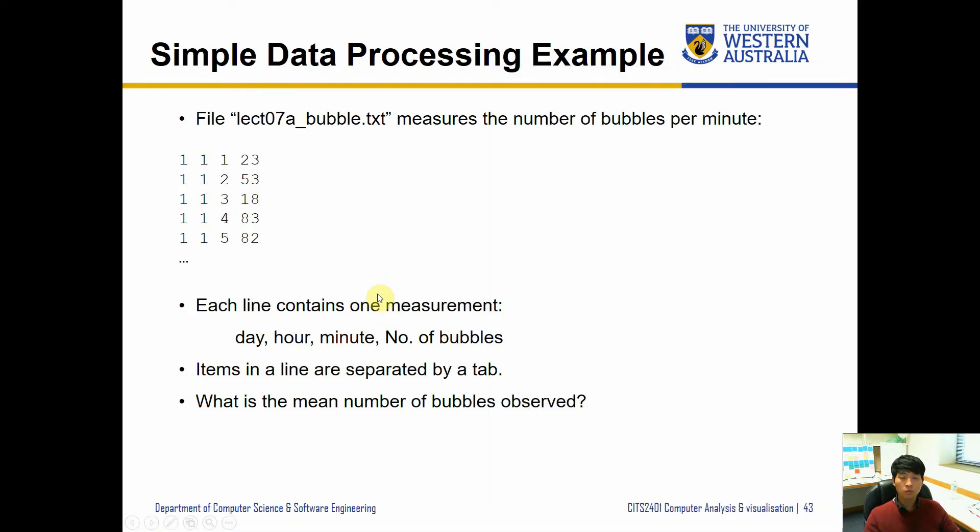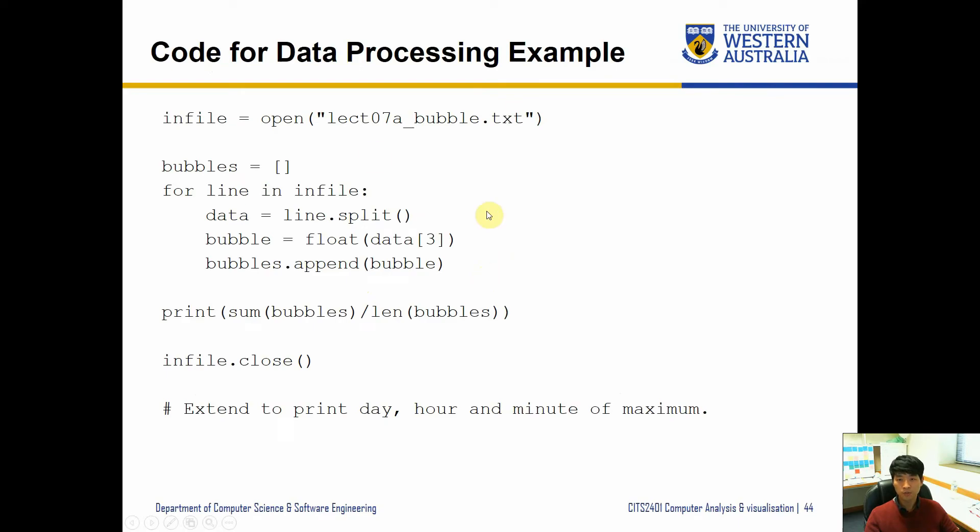What we want to do is find what is the mean number of bubbles observed through the whole contents that we have. What we can do is write up the code to read each line and get the content of the last column, and then apply our logics there. So this is what the code looks like.